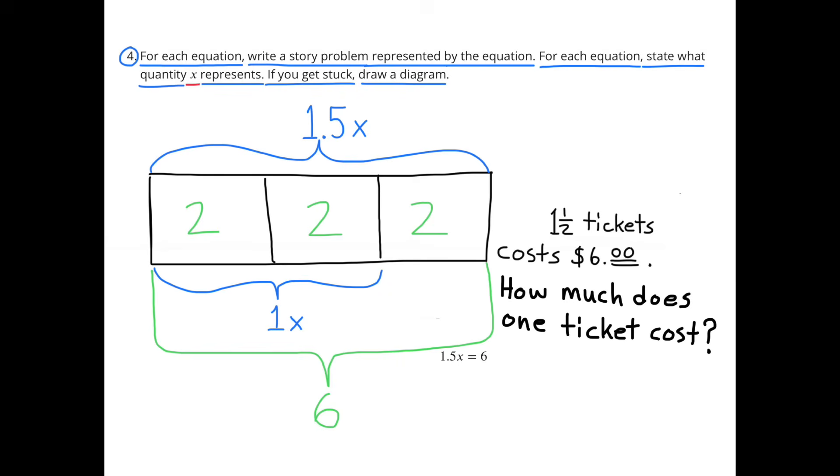1 and 5 tenths x equals 6. 1 and 1 half tickets cost 6 dollars. How much does 1 ticket cost? In my diagram, I have 3 boxes. Each box is worth 2. I put 2 inside each box because 2 times 3 equals 6. And 1 and 1 half tickets cost 6 dollars. 1 x has a value of 2 boxes or 2 plus 2. So the value for x is 4. x equals 4.